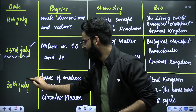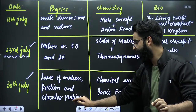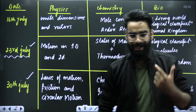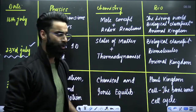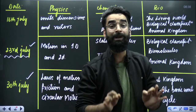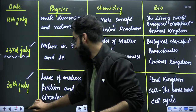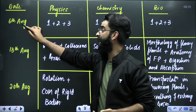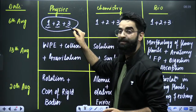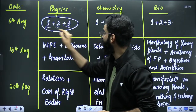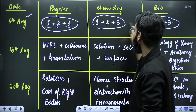The third test is on 30th of July. Physics includes laws of motion, friction and circular motion. Chemistry includes chemical and ionic equilibrium. Biology includes plant kingdom, cell — the basic unit of life — and cell size. So this is the syllabus of your first three tests in this All India Test Series, which is perfectly designed for NEET 2024 students. Now look at the other three tests as well. The fourth test, which is on 6th of August — it is a combined test. Whatever syllabus was there in test number one, two and three — that complete syllabus of physics, chemistry and biology will be there in the fourth test.